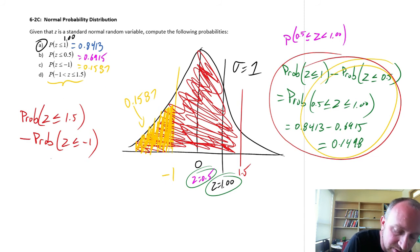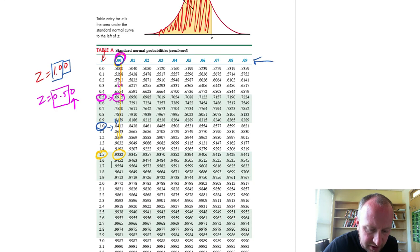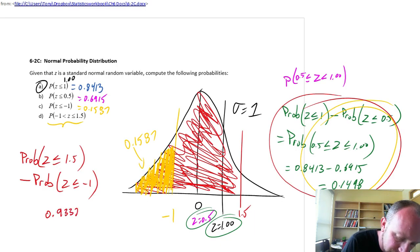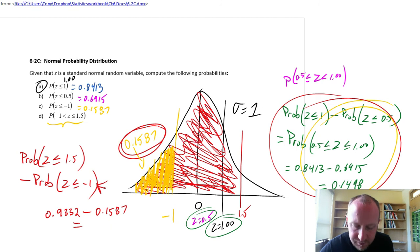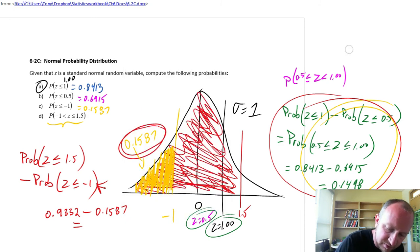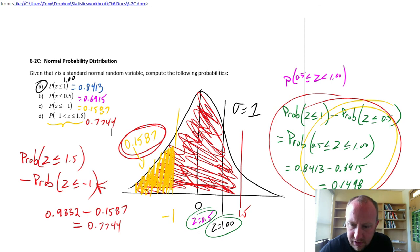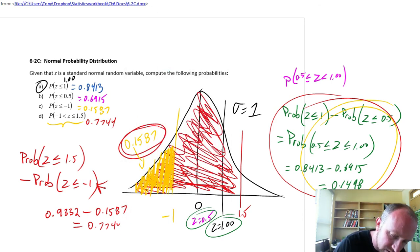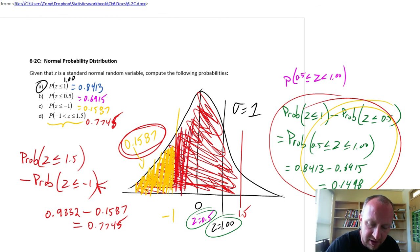So the red space, the probability that z is less than or equal to 1.5, this is 0.9332. Minus this probability here, which we've already calculated right here, 0.1587. This is equal to 0.9332 minus 0.1587. So 0.7745. So that's our red space. Greater than negative 1 and less than 1.5.